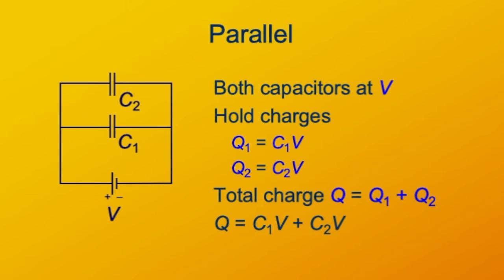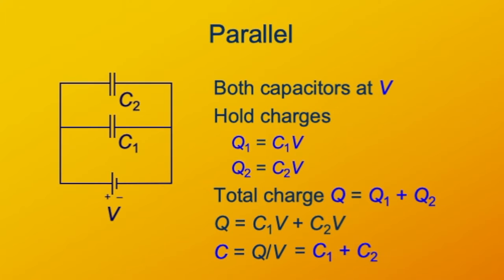So we can add those together. C1V plus C2V is the total charge. If you want to think of this as being a single capacitor with some equivalent capacitance C, we can find out what that is. C is Q over V — the charge divided by the voltage. The charge is C1V plus C2V; you divide that by the voltage, and you get that the capacitance is C1 plus C2.